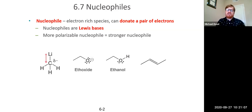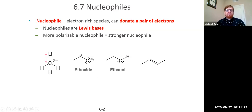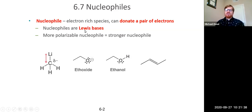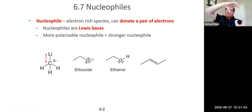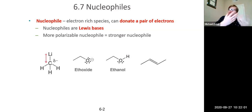A nucleophile is going to be an electron-rich species that can donate a pair of electrons in a chemical reaction. Another way to define a nucleophile is that it acts as a Lewis base — Lewis bases are donors of a pair of electrons. Importantly, a pi bond can also serve as a nucleophile. The electrons in a pi bond are not a lone pair and are not localized on one atom, but they stick out in space and can act as a region of electron density that can attack electrophilic sites.